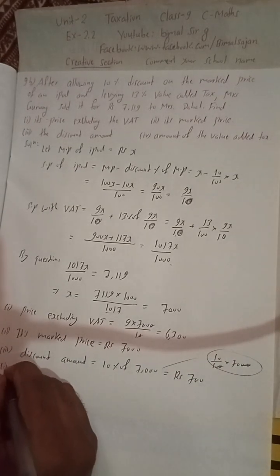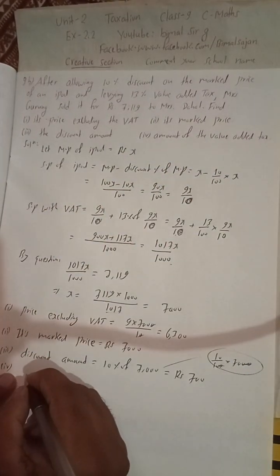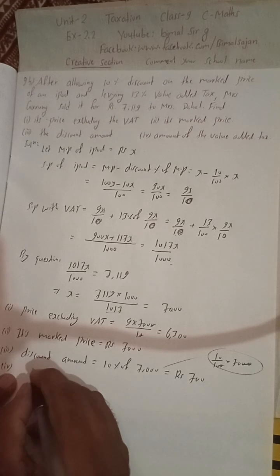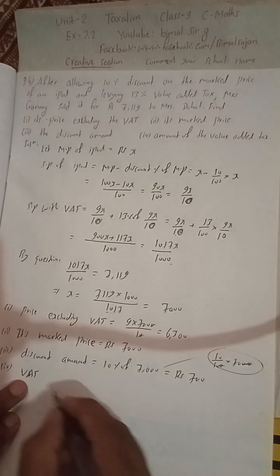Number four, amount of value added tax. The VAT amount will be SP with VAT minus SP without VAT.